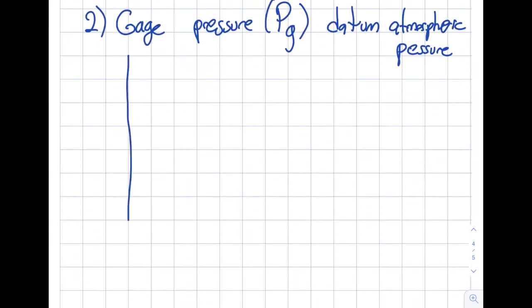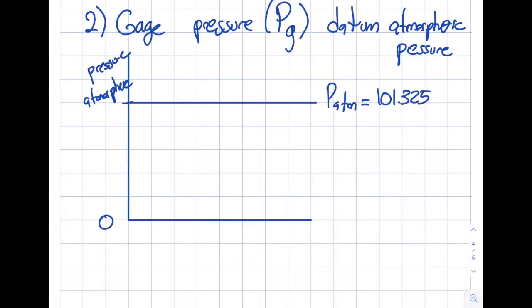So I will explain these two differences in a graph. I think it will be better for all of us. Let's draw the y-axis. And let's call this pressure. And let's have an x-axis here as well, like this. And let's say that this is basically pressure zero over here. Let's have another line over here and let's say that this is atmospheric. And let's have a line over there as well.